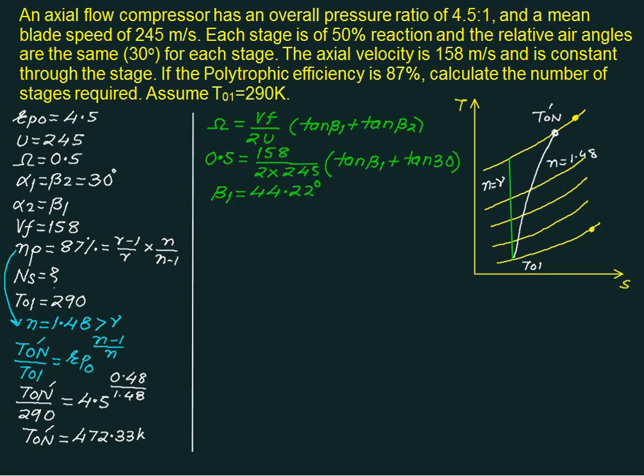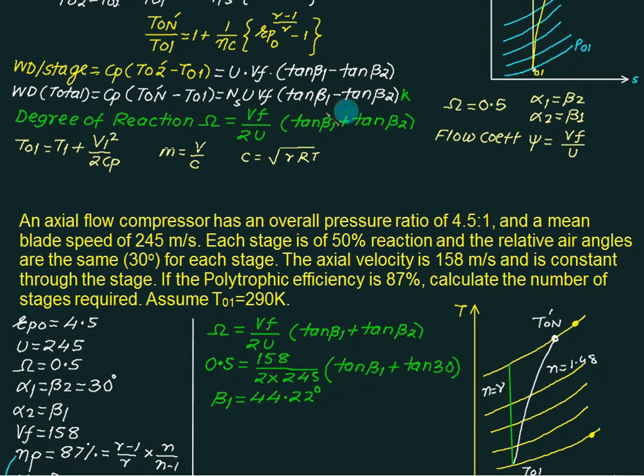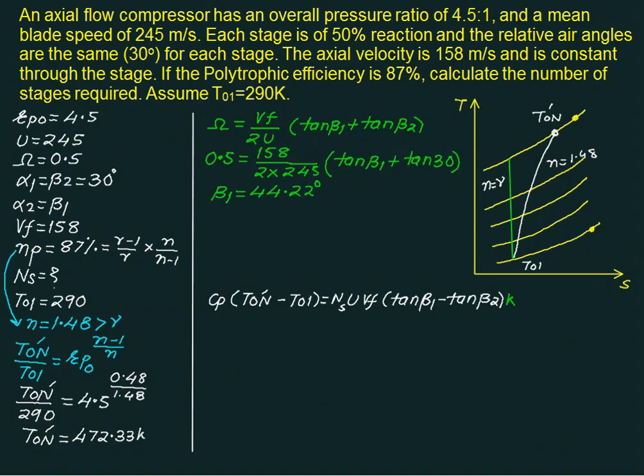Now the final equation that we are going to use will equate this work done. Total work done will be equal to Cp multiplied by this value. We have Cp multiplied by T0n dash minus T01 equal to number of stages multiplied by u Vf tan beta 1 minus tan beta 2 multiplied by k. Work done factor is not known, we assume 1.